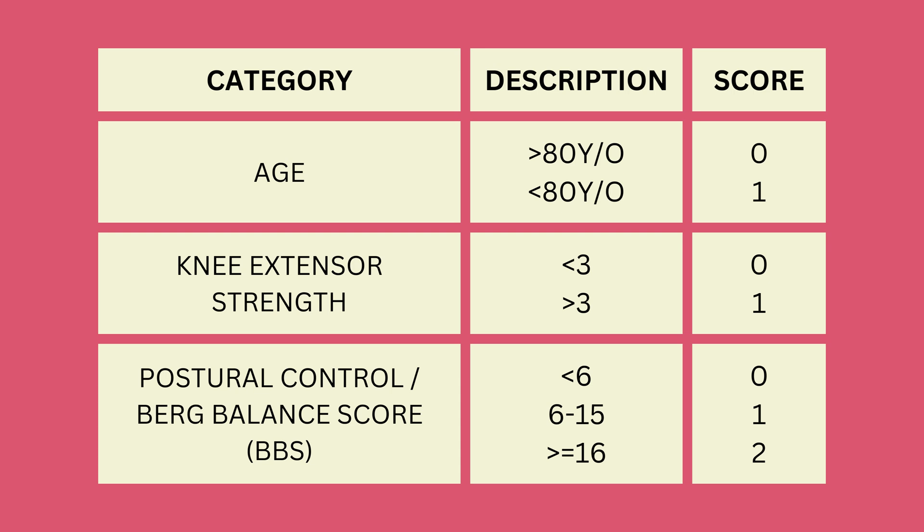For the knee extensor MMT, if you score above 3 — meaning you can extend your knee against gravity — then you receive a score of 1. If not, then you receive a score of 0.